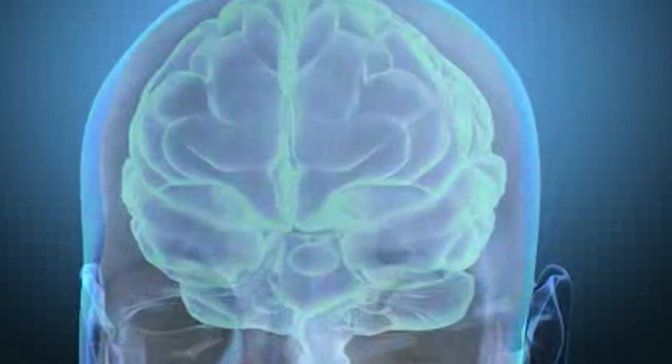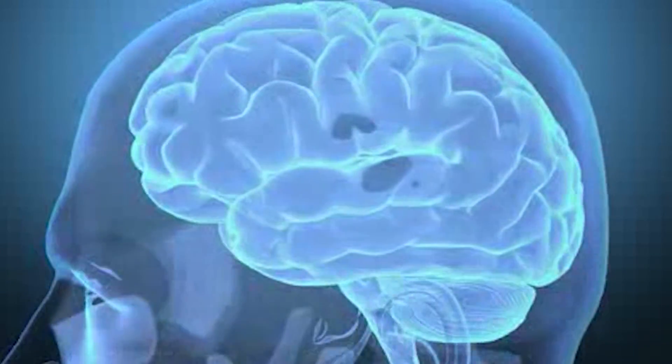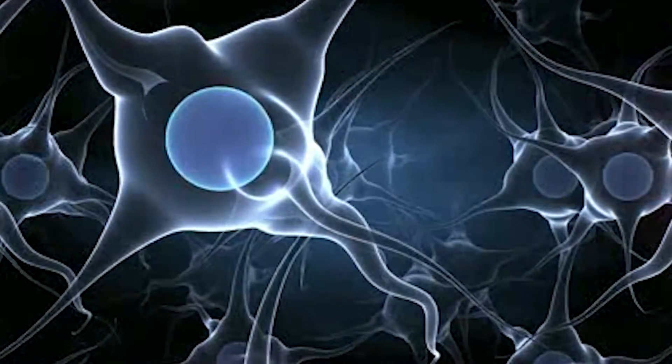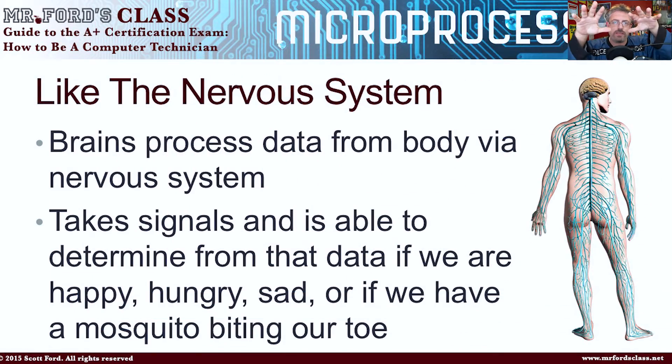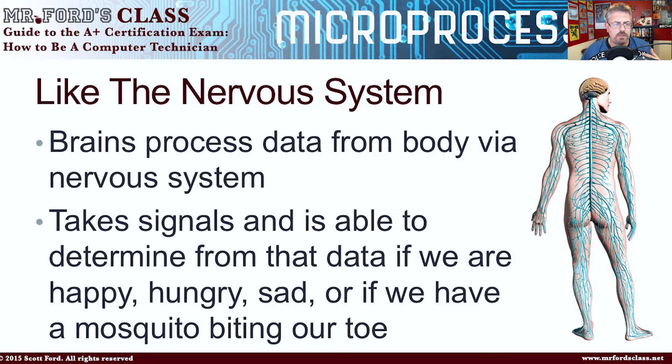Now, you probably know what the brain is and the nervous system from elementary school, middle school, high school. The brain is where we process information. It's where we feel things, think about things. It's where information is stored and acted upon. But the brain doesn't act on its own — it requires information to get in and information to come out. And that's where the nerves come in. So as we're talking about the CPU, you'll hear me talk about the brain and the nervous system a couple of times.